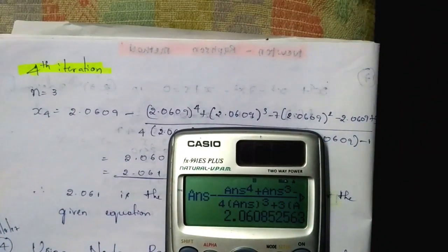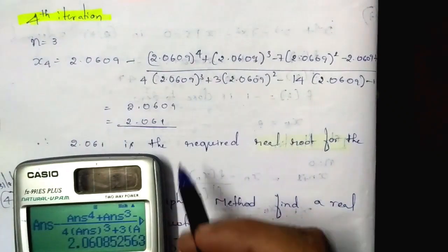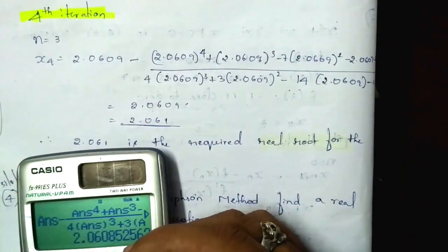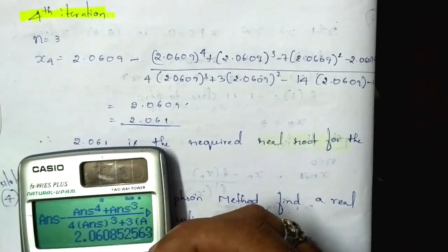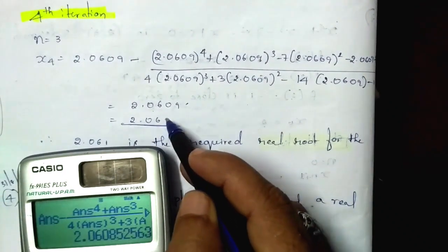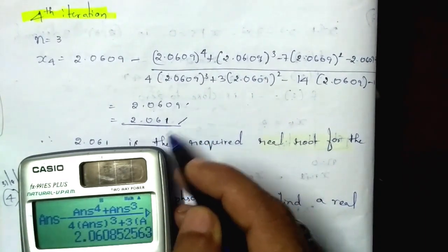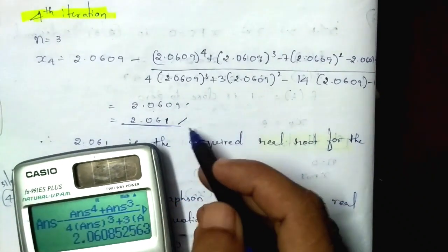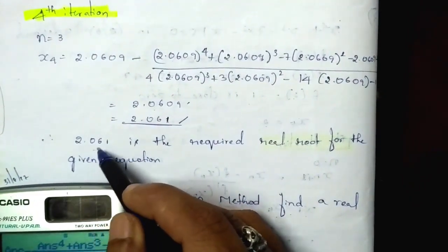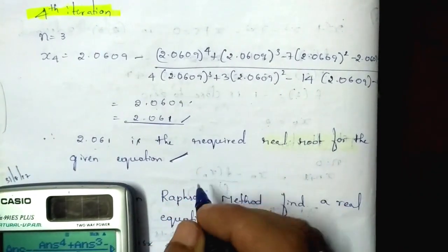The answer is 2.0608, approximately 2.0609. The round figure is 2.061, which is the same as the previous iteration value 2.061. Since both values are the same, we stop the iteration. The final answer is 2.061, which is the required real root for the given equation.